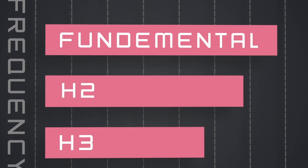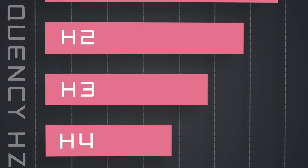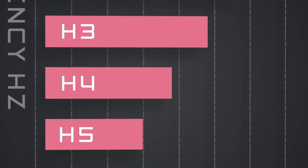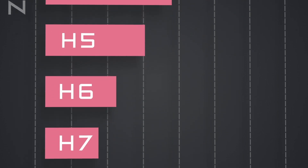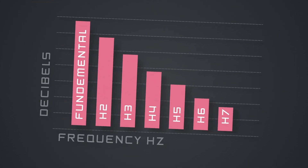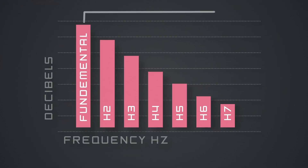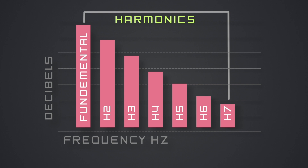Those other frequencies always appear in a very organized and mathematical order. All those frequencies are called harmonics. All together they create our sound. The first harmonic is the pitch we are singing, and above it is the rest of the harmonics.